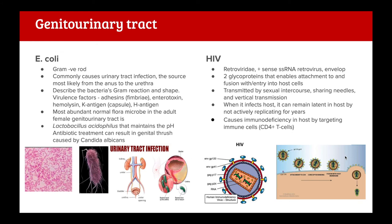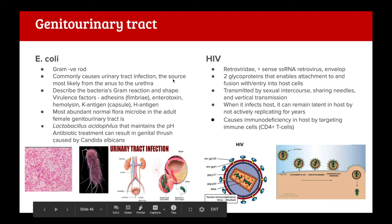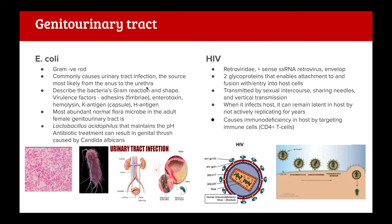Pathogens affecting the genital urinary tract: E. coli is the most common cause of UTIs. It's a gram-negative rod; the source is usually from the anus to the urethra. Virulence factors include adhesins (fimbriae) that allow it to attach to host cells, enterotoxin, hemolysin, and a capsule or H antigen. It's the most abundant normal flora microorganism in the adult female genital urinary tract.